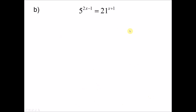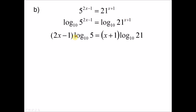We'll try more examples. Again we have indices here which consist of unknown x, so when this happens we use logarithms to help us. We log both sides — log base 10 of this and log base 10 of that. Using the power law we can bring 2x minus 1 to the front, and bring x plus 1 to the front on the other side. Keep in mind that when you bring 2x minus 1 to the front, this is still a number, so you need to put brackets because log base 10 of 5 multiplies all the terms inside.